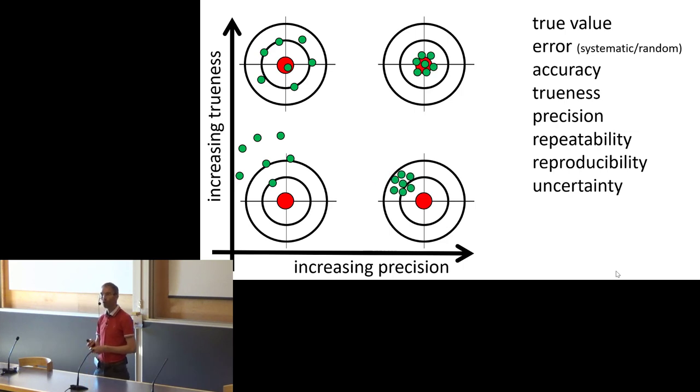And the last one is the concept of uncertainty, because a high accuracy and a high precision, that is what you think you want to have, but maybe not necessarily so.